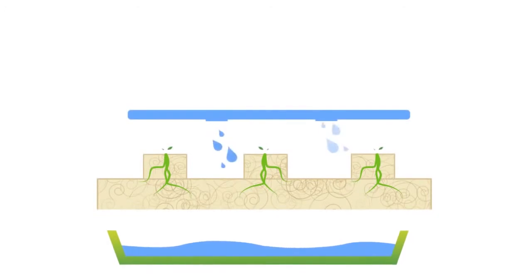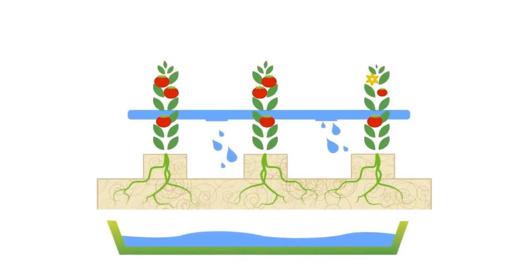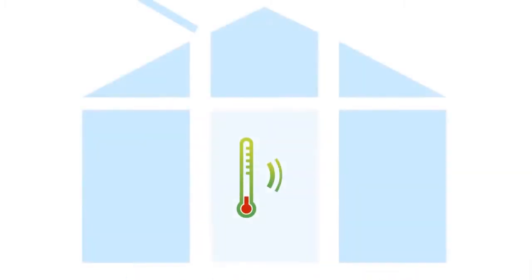Stone wool has a number of advantages. It does not lock up any of the applied liquids, so the grower knows exactly how much water and nutrients he's giving his plants. Plus, the grower can regulate the climate in the greenhouse just the way he wants.